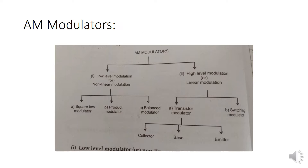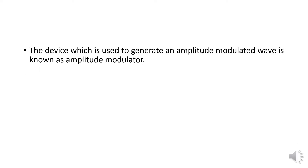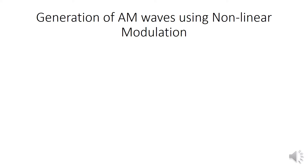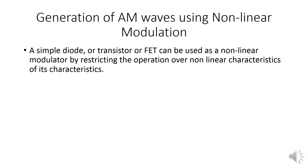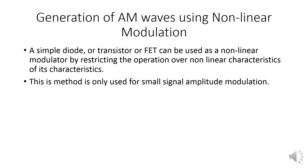In the transistor modulator, we are having the terminals: emitter, base, and collector. The device which is used to generate an amplitude modulated wave is known as an amplitude modulator. This method is mainly based on AM generation and will be classified into two types based on the characteristics.